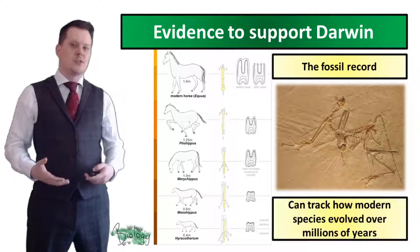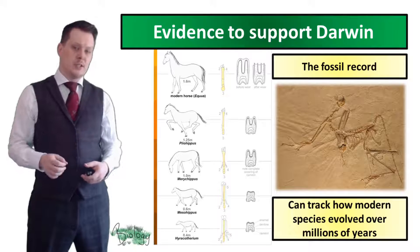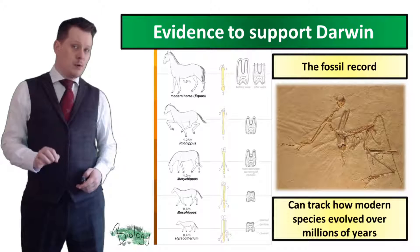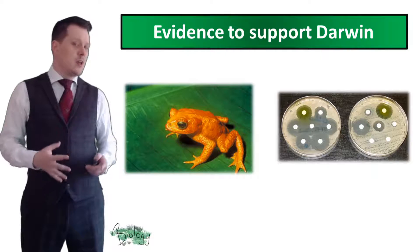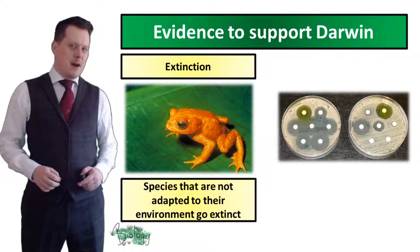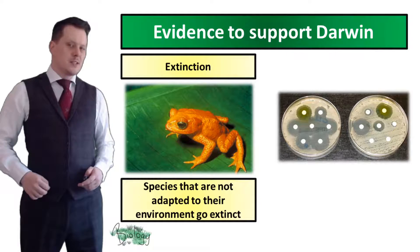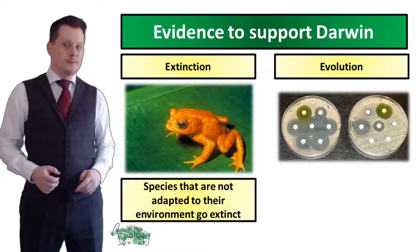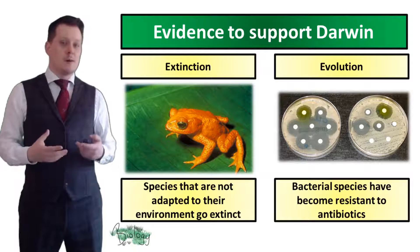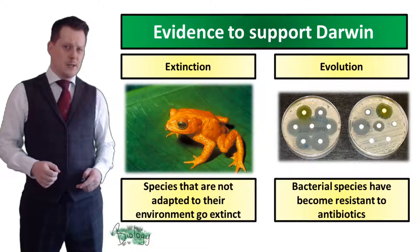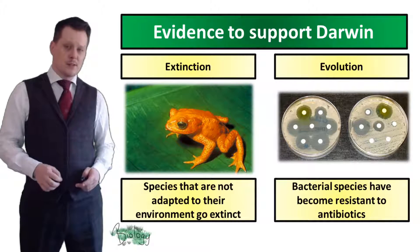Because of this, the fossil record allows us to track how modern species evolved from ancestor species. Further evidence includes animals becoming extinct — species which didn't have the best characteristics to survive in their habitat eventually died out. Since the publication of his work, there have been many documented cases of evolution, especially bacteria becoming resistant to antibiotics, as well as in organisms with very short lifespans such as the fruit fly.